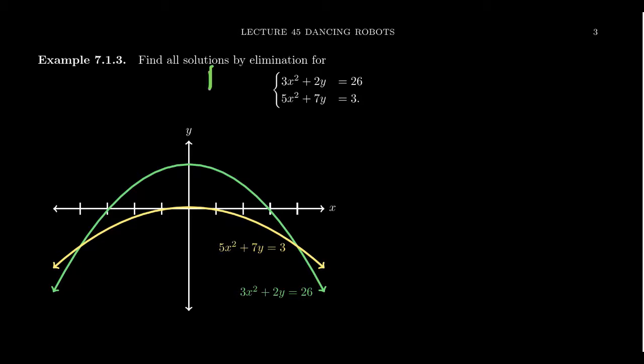The first one is a parabola that is concave downward. The other one also is going to be a parabola that concaves downward. We don't necessarily need to know that in order to solve it, but it can be helpful to have these pictures in front of you.